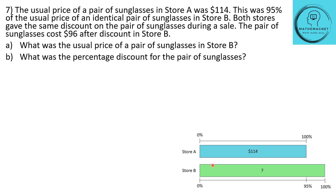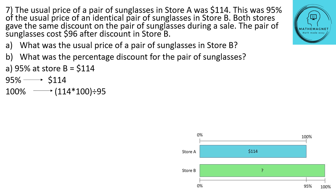Let's look at the bar model. Store A's usual price of $114 becomes 100%, and this value of $114 is only 95% of the usual price in store B. Both stores gave the same discount, and the sunglasses cost $96 after discount in store B. Let's find the usual price of the sunglasses in store B: 95% of store B is $114, so 100% will be 114 × 100 ÷ 95 = $120. The usual price of the sunglasses at store B was $120.